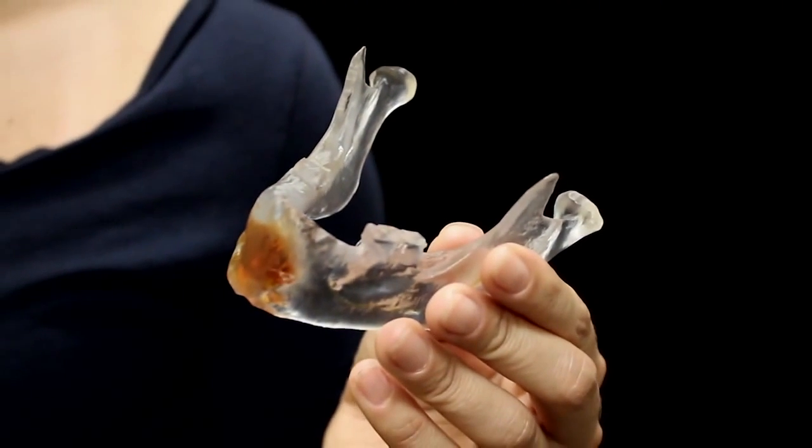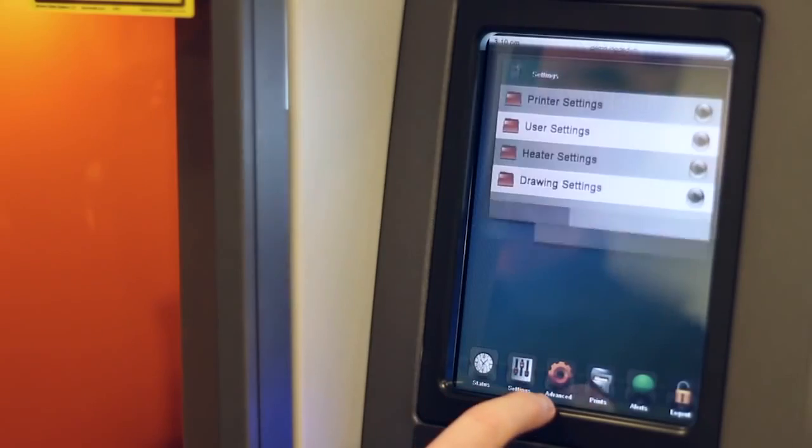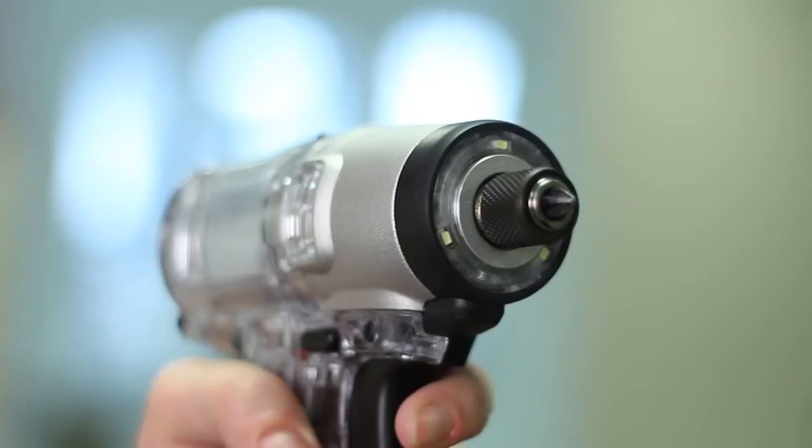With the Projet 6000 and 7000, I can create highly detailed realistic medical education models. With a convenient touchscreen interface and a simple top change material station, it's easy to print prototypes or functional parts and take advantage of the unparalleled material choices the 6000 and 7000 have to offer.